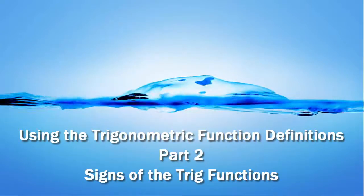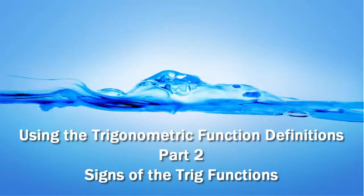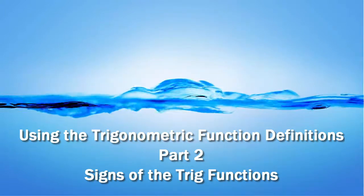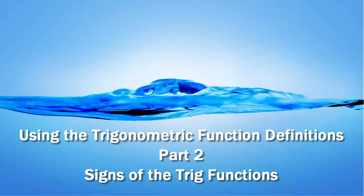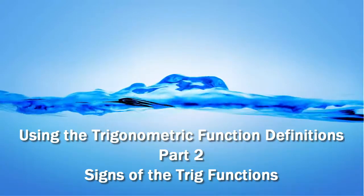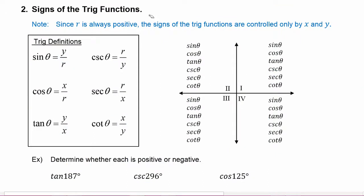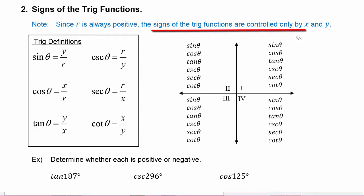In part two of our lesson on using the trig function definitions, we're going to learn how to find the signs of the trig functions in all four quadrants. Remember, all the trig functions are just ratios of x, y, and r. We know that r is always positive, so r will never change the sign of any trig function. The signs of the trig functions will be completely controlled only by the signs of the x and y coordinates.